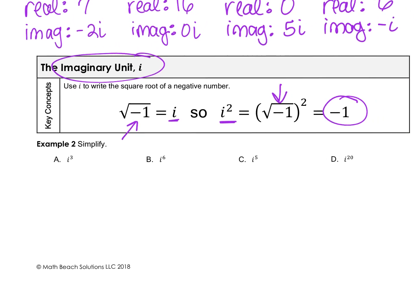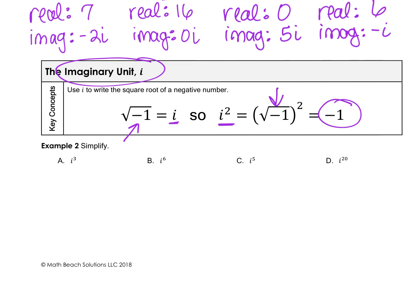We're going to simplify powers of i. Start by using i squared, since we know that equals negative 1. To get i cubed, write it as i times i squared, because we add the exponents. We already know i squared equals negative 1, so i times negative 1 gives us negative i.